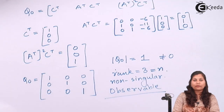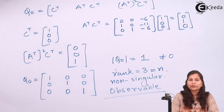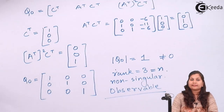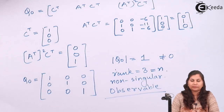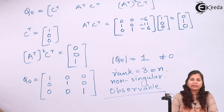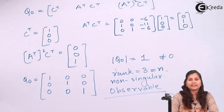So, if the rank of the QC and Q0 matrices equals the number of state variables, the system is said to be completely controllable and observable. Here we have checked the controllability and observability of a system whose transfer function was given to us. I hope this problem is clear to you. Thank you.